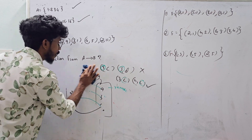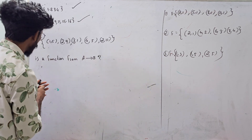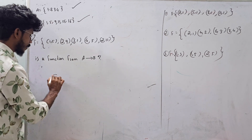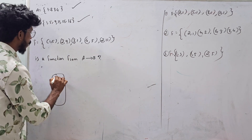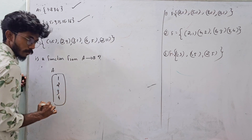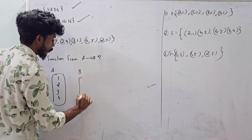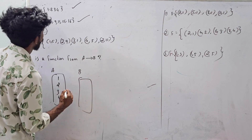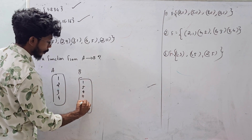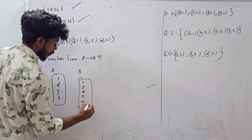Then we will take a question here. How many elements? The answer is 1, 2, 3, 4. And how many in the range? The answer is 1, 5, 9, 11, 15, 16. This is the answer.